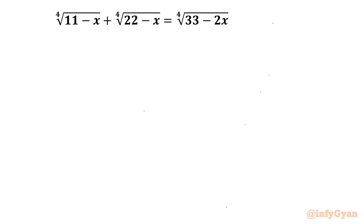Welcome back to Infigyan, my dear friends. In this exciting and challenging video on Radical Equations, we are going to take up one very interesting equation: the 4th root of (11 minus x) plus the 4th root of (22 minus x) is equal to the 4th root of (33 minus 2x). We have to find real valued x.